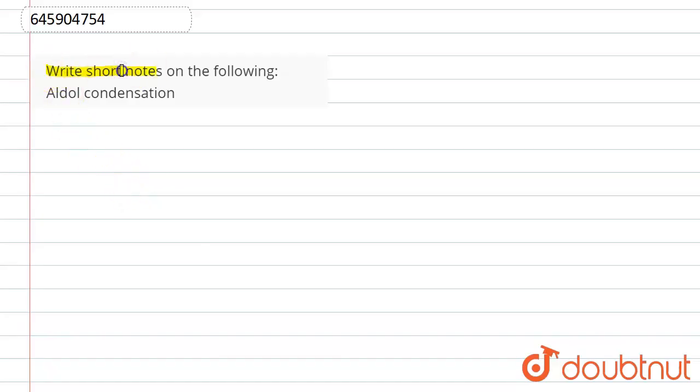...to write short notes on the following, and the question is asking for aldol condensation. So basically, aldol condensation is a characteristic reaction of aldehydes and ketones containing active alpha hydrogen. What is called active alpha hydrogen? In any carbonyl group, the adjacent carbon is called alpha carbon, and the hydrogen present on this carbon is known as alpha hydrogen.